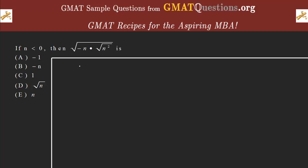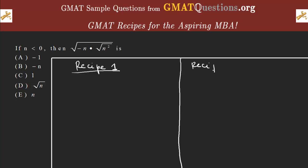I'm going to do this question the easy way first — I'll call it Recipe 1, the first method. Then I'm going to show you a different way of doing it: Recipe 2. Recipe 1 — what I recommend you do is just plug a number. You have a variable here, n.